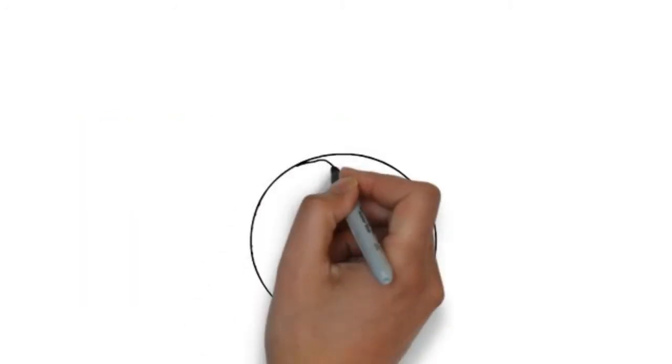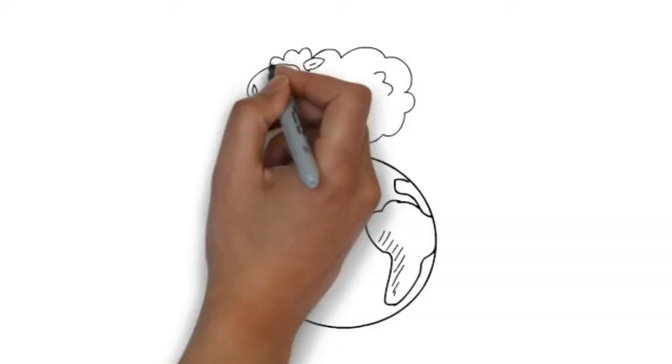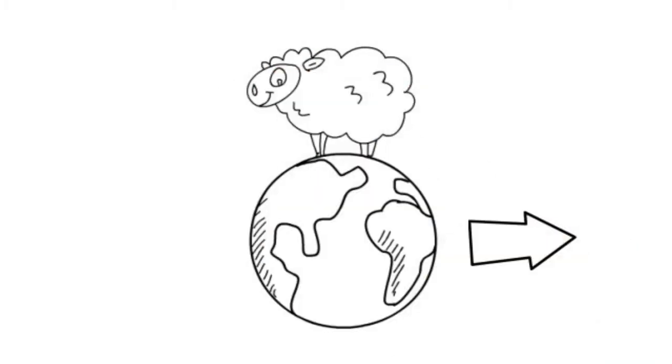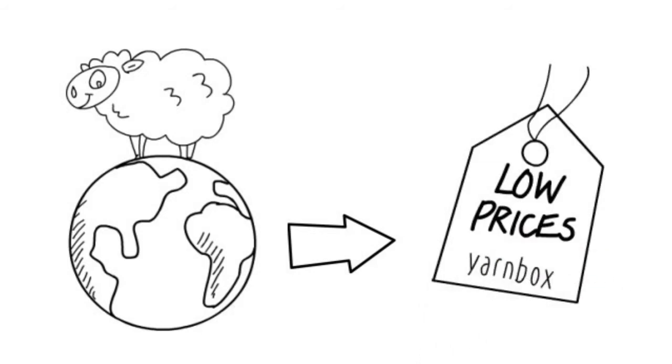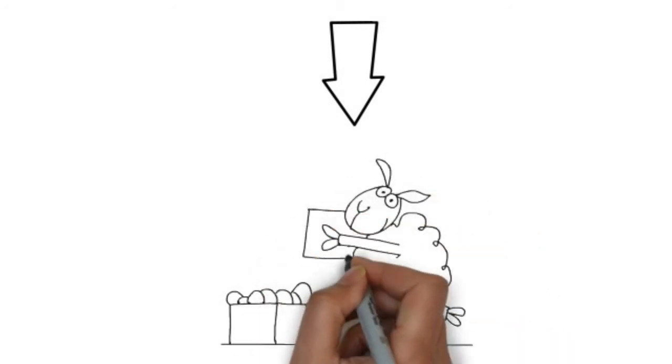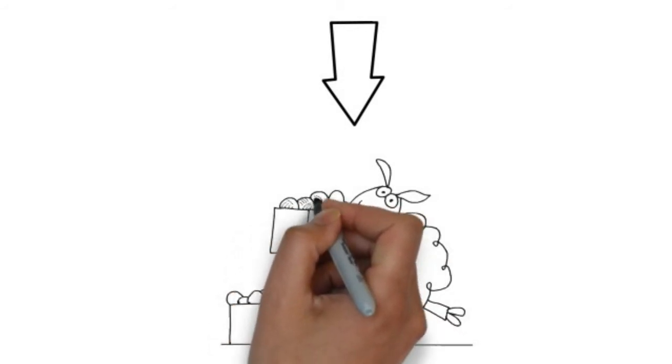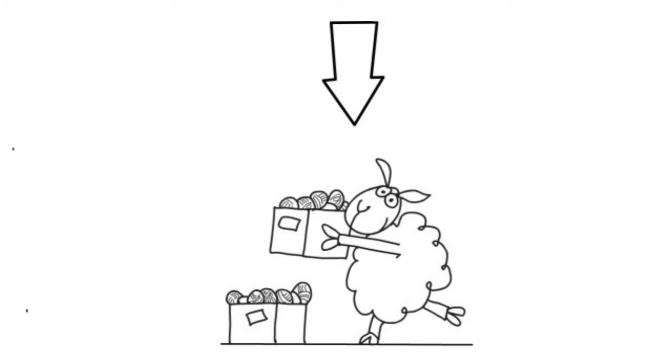The folks at Yarnbox are connected to all sorts of knitting manufacturers and distributors around the world. These manufacturers learn that by giving their products away for next to nothing in a Yarnbox, their customers will try out their yarns and patterns, love them, and continue to buy more and more. Each month, Yarnbox chooses the best yarns and patterns, packs them up in a fancy box, then ships those boxes to customers all over the world.